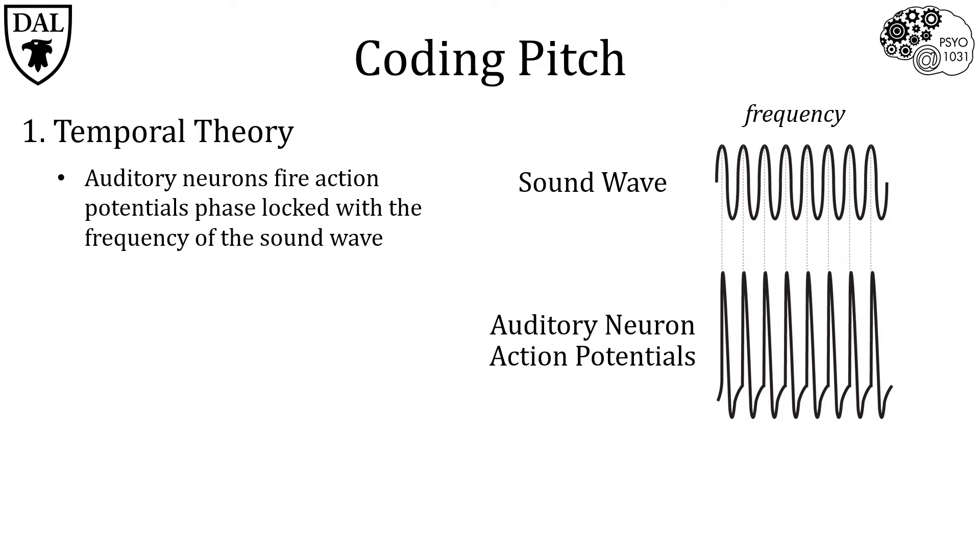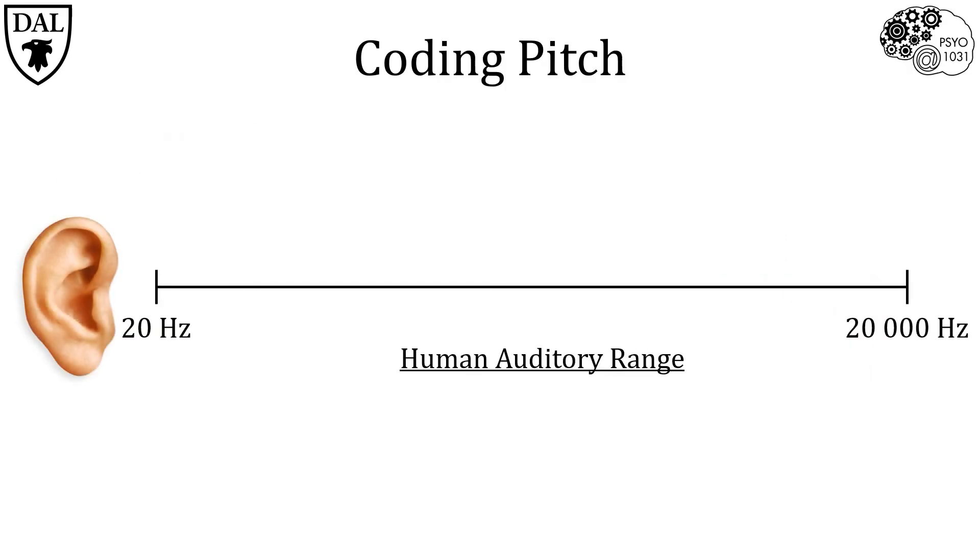However, there is a physiological limit to how quickly action potentials can be generated due to the absolute refractory period. This limit is approximately a thousand Hertz. This presents a problem as humans can hear from 20 to 20,000 Hertz. Thus, phase locking only enables a small range of frequencies that humans can hear.